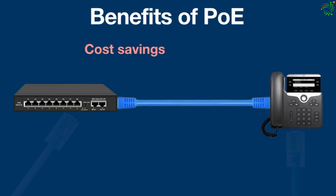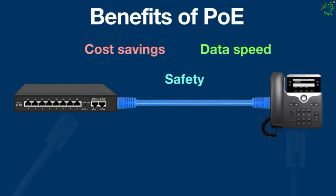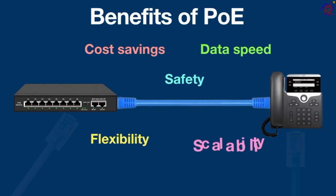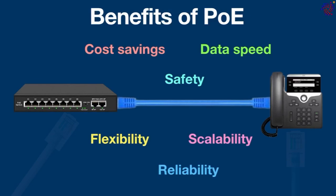The benefits of Power over Ethernet include: cost savings — ethernet carries both power and data so there is no need to install separate electrical wiring and power sockets; safety — PoE automatically stops current flow if there is a service interruption; data speed — PoE can deliver data at one gigabit per second; flexibility — devices can be positioned in ideal locations and easily repositioned without being tied to wall adapters; scalability — having power available on the network makes installation and distribution of network connections simple and effective; and reliability — PoE power can be backed up by a UPS for continuous operation during power failures, and devices can be easily disabled or reset from a centralized controller.